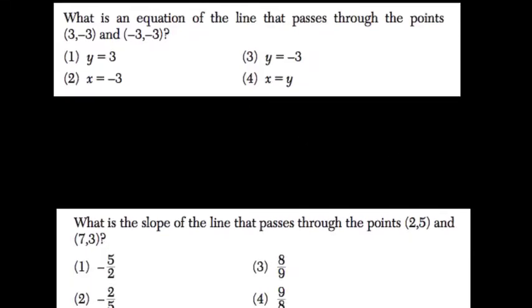What is an equation of a line that passes through these two points? So, here we have (3, -3) and (-3, -3).